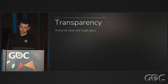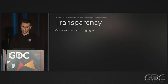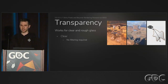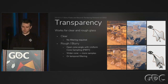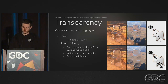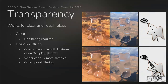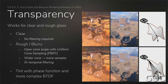What's cool about this technique is that it works for both rough and clear glass. For clear glass, you don't need any filtering. For rough glass, we open the cone angle, so you either need more samples to get rid of the noise or you can use temporal filtering. The examples shown here represent a very simple material model for glass, but obviously you can do something more complicated.